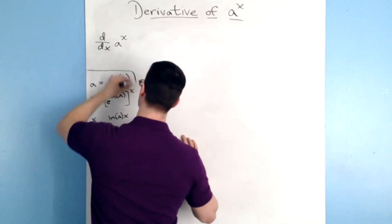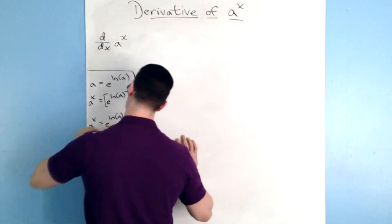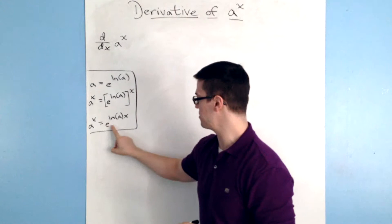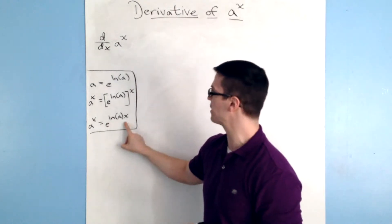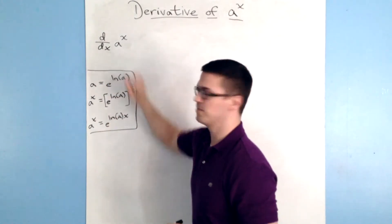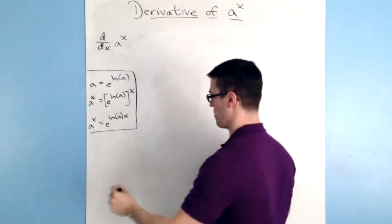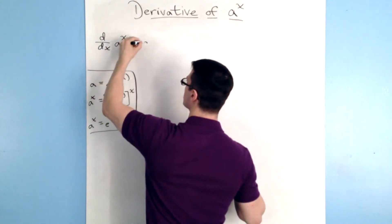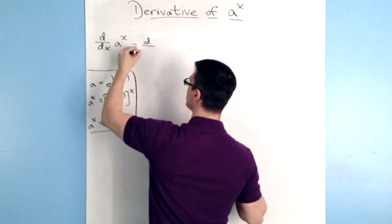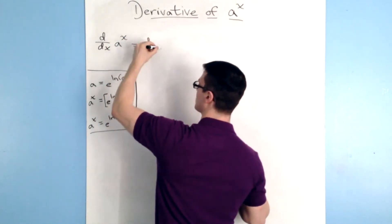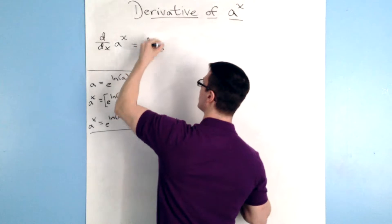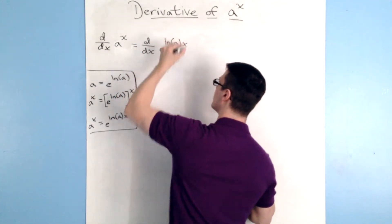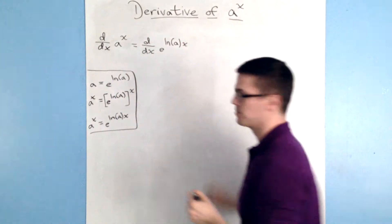I'm going to put a little box around this so it doesn't get confusing, but I'm going to use this fact that a to the x is equal to e to the ln a times x to find the derivative of a to the x. So I'm going to substitute this in, and I'll have the derivative with respect to x of e to the ln a times x.